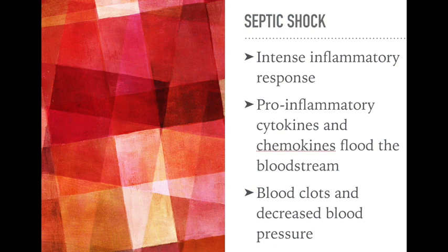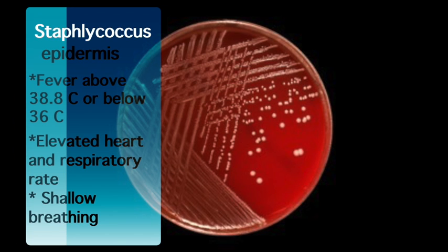Septic shock is mainly due to the intense inflammatory response that the immune system invokes to fight the infection, during which pro-inflammatory cytokines and chemokines flood the bloodstream and cause generalised inflammation, which can lead to blood clots and drops in blood pressure. Symptoms include a fever above 38.8 degrees Celsius or below 36, elevated heart rate and respiratory rate with shallow and fast breaths, and in serious cases, drops in blood pressure leading to dizziness.